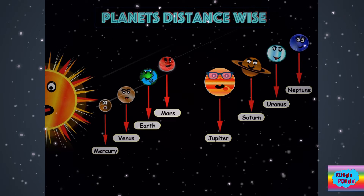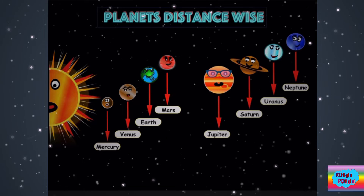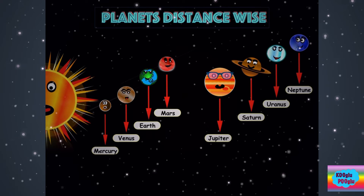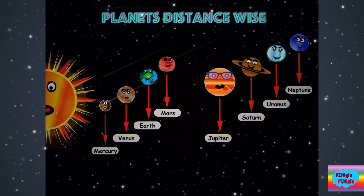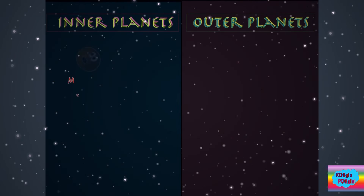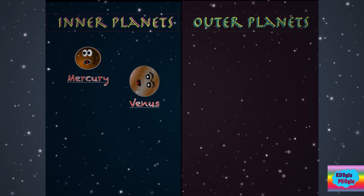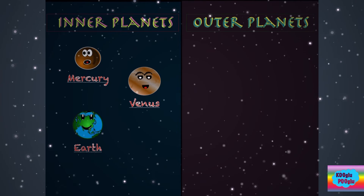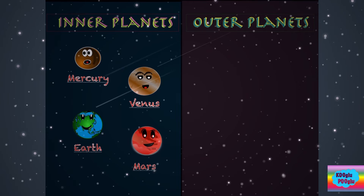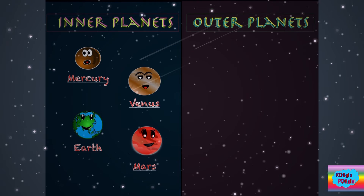Now we can easily say that the four planets which are close to the sun are inner planets, and the remaining four are known as outer planets. Our inner planets are Mercury, Venus, Earth, and Mars.